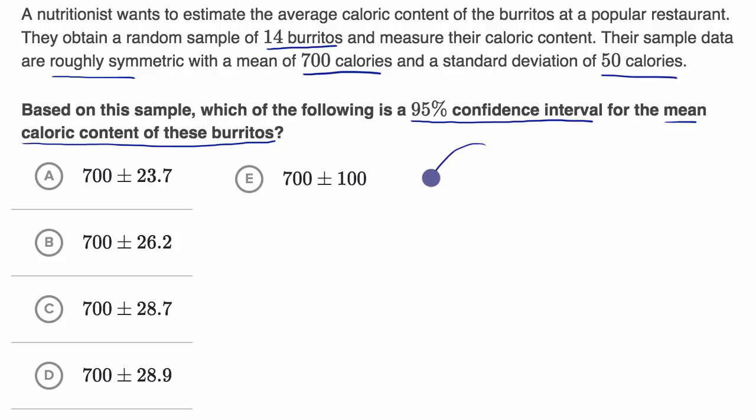All right, what's going on here? There's a population of burritos here. There is a mean caloric content that the nutritionist wants to figure out, but doesn't know the true population parameter, the population mean. So they take a sample of 14 burritos and they calculate some sample statistics. They calculate the sample mean, which is 700. They also calculate the sample standard deviation, which is equal to 50.